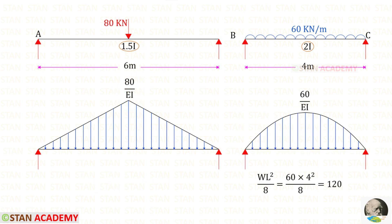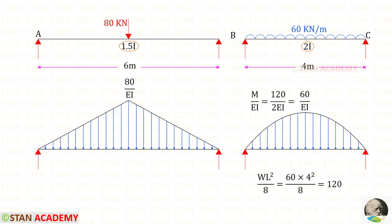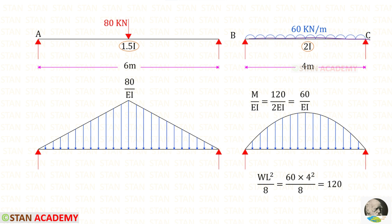Now let us take beam BC, where a uniformly distributed load is acting. The formula for maximum bending moment is WL squared upon 8. Here W is 60 and L is 4, giving us 120 kNm. For M upon EI, M is 120 and EI is 2EI, giving us 60 upon EI. Since it is a uniformly distributed load, the diagram will be in the shape of a parabola.